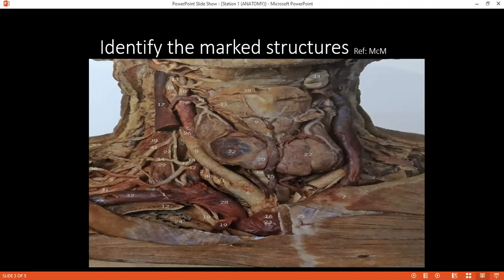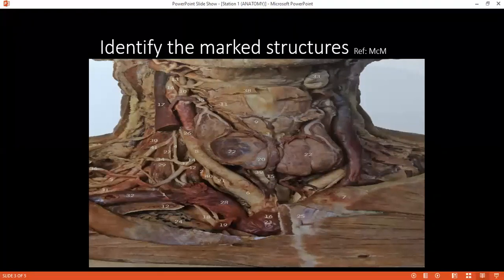Examiner: Can you please identify structure 33 here? Student: That is the submandibular gland. Examiner: Can you please tell me about the submandibular gland — what type of secretions are secreted? Student: It has a mixed secretion — serous and mucous. It has two parts, the superficial and deep part, which are separated by the mylohyoid muscle.